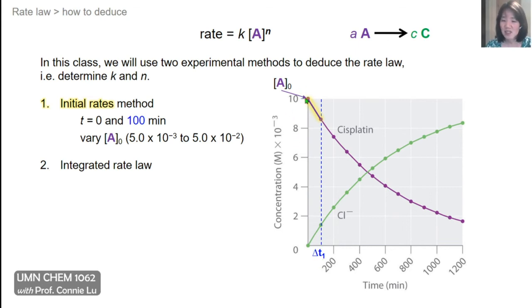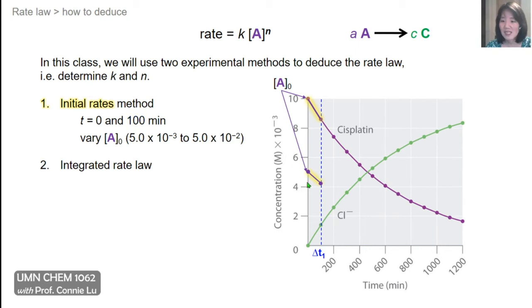Starting with A₀ of 1×10⁻² M, we watch it decline in the first 100 minutes to about 8.5×10⁻³ M — that's one measurement. In the next experiment, we vary A₀ over a wide range, say from 5×10⁻³ to 5×10⁻² M. Starting with A₀ of 5×10⁻³ M and measuring the next concentration over the same time interval, we calculate the initial rate at each concentration. By comparing those rates and doing some math, we can determine the reaction order.